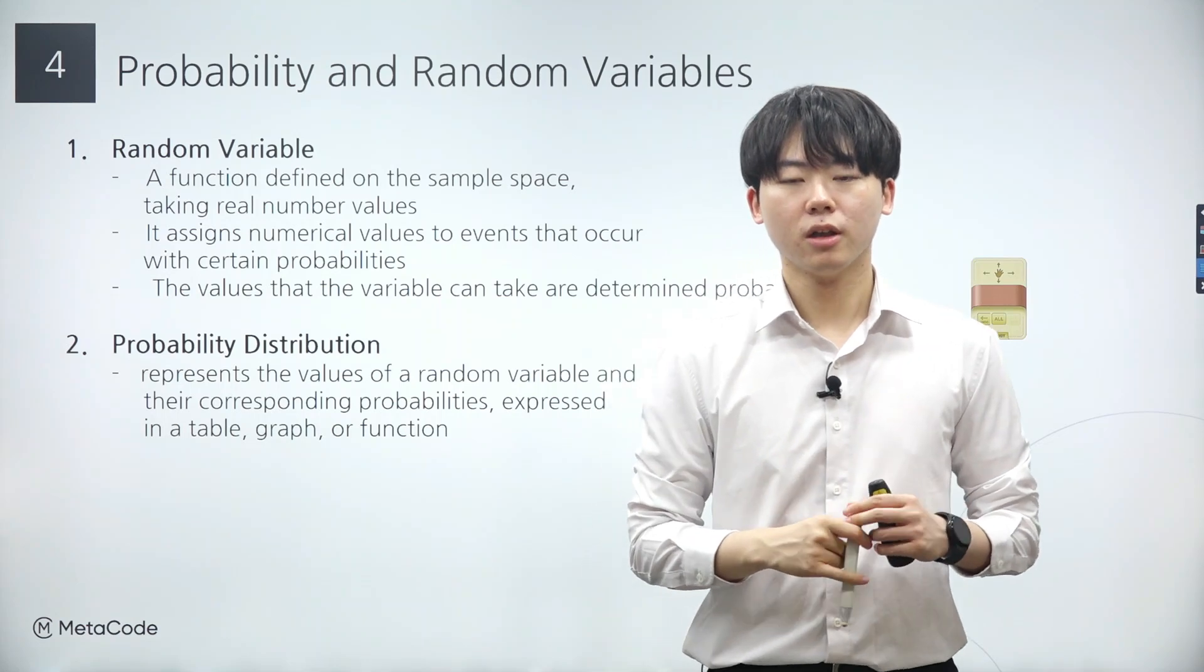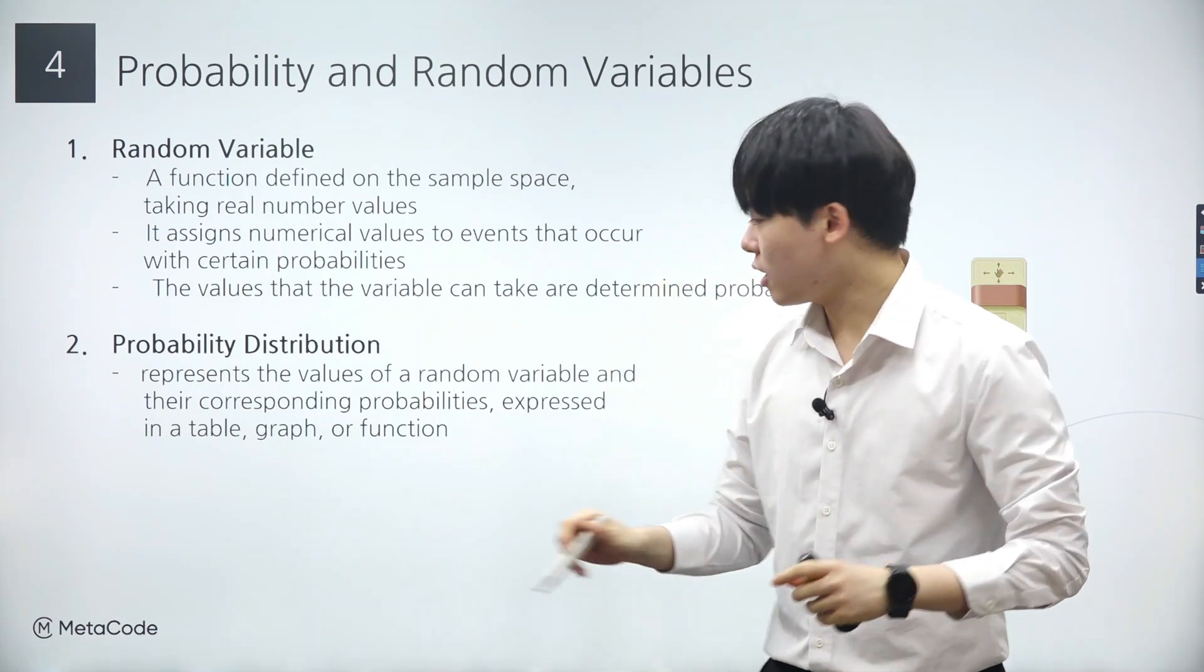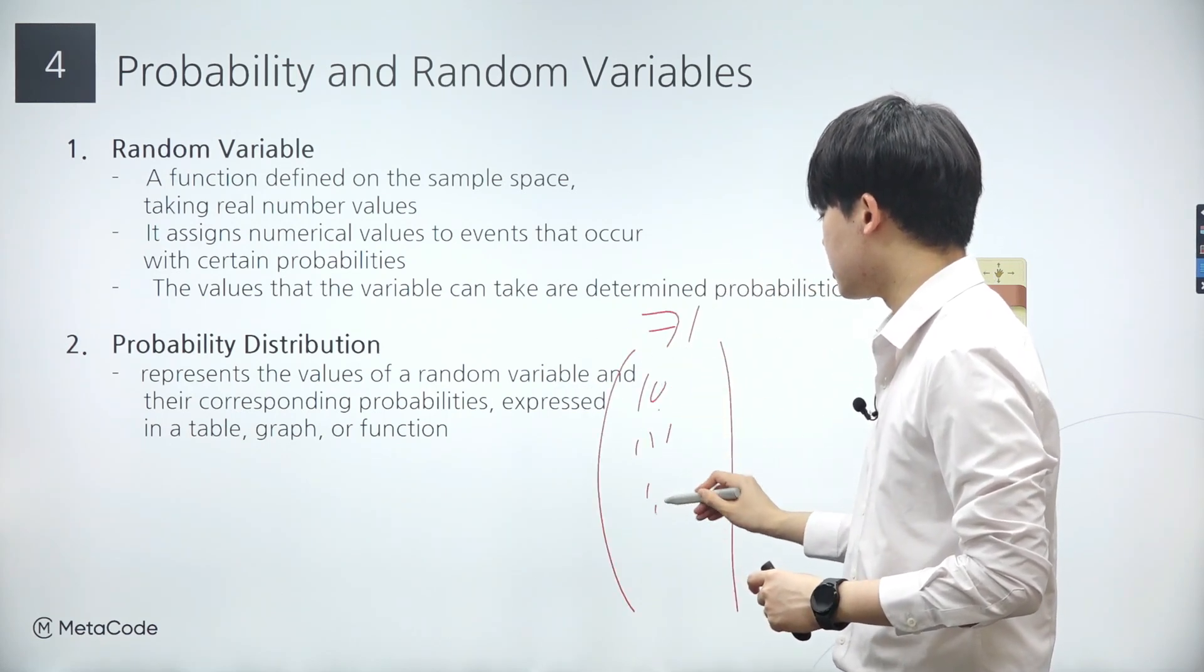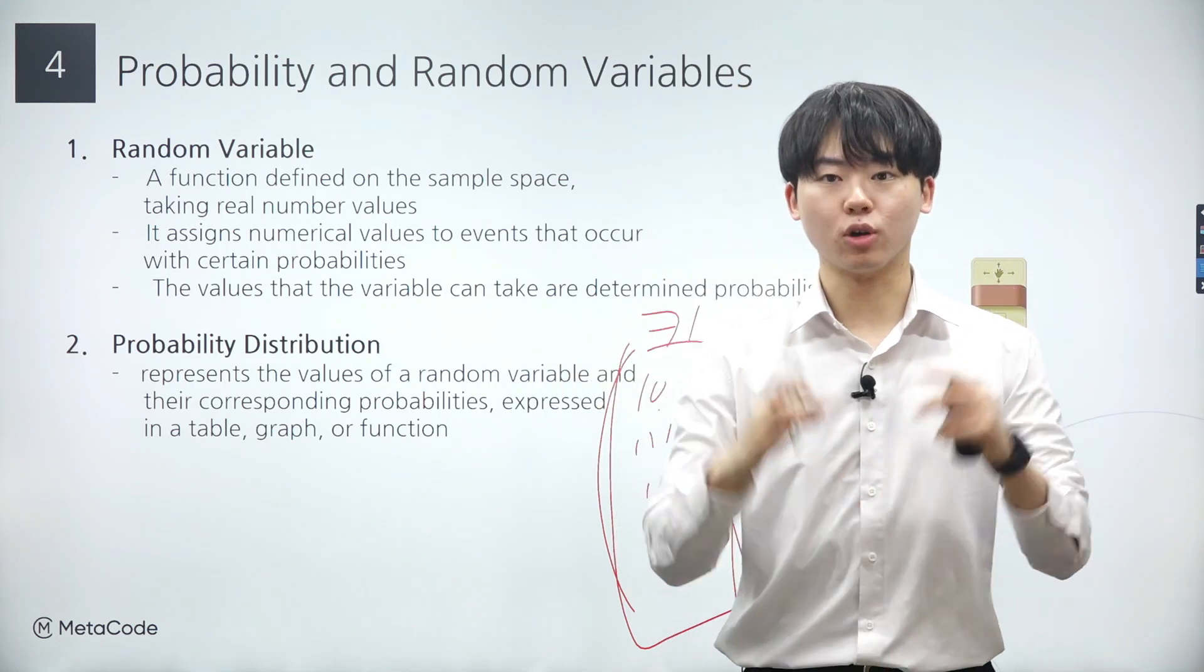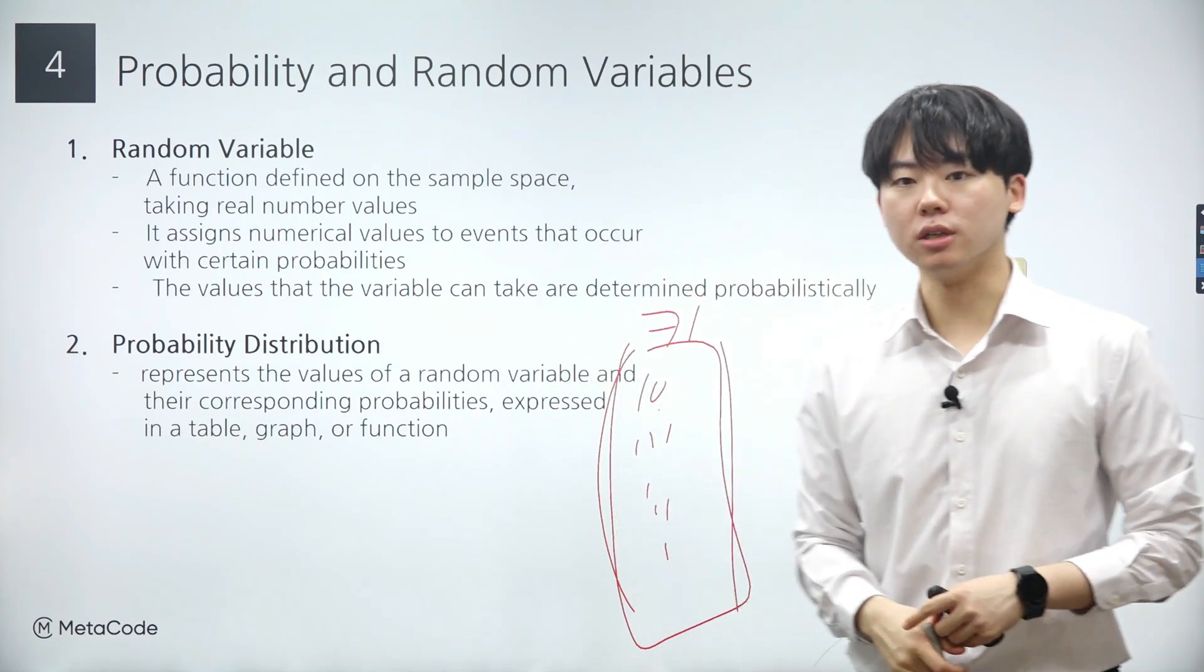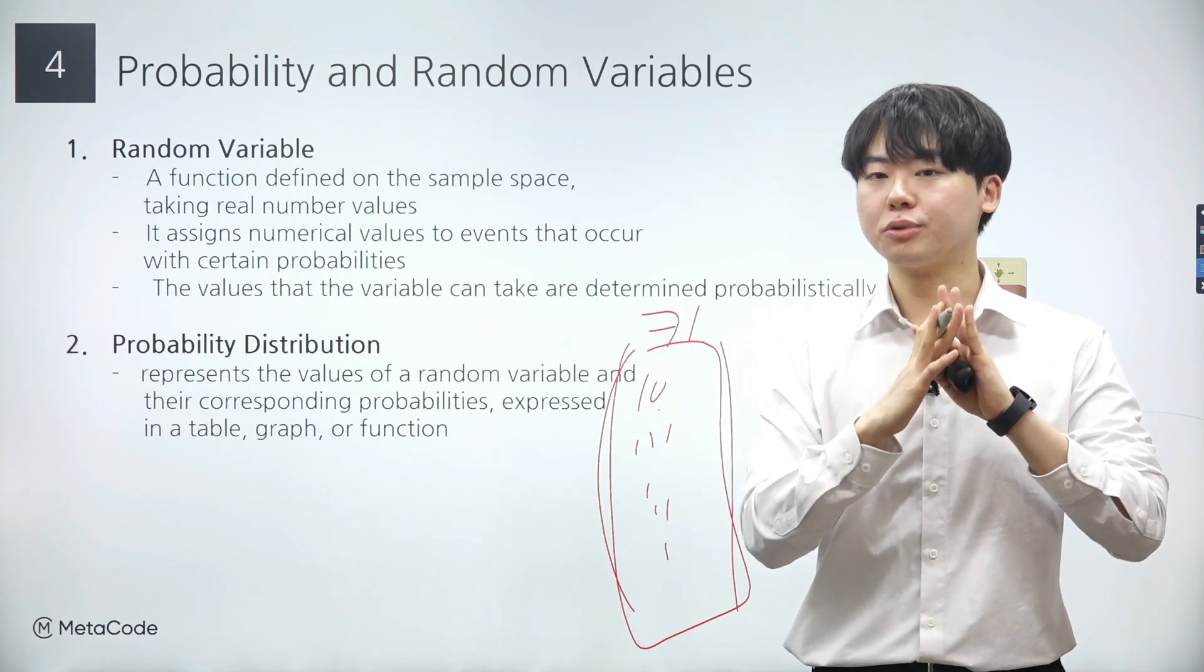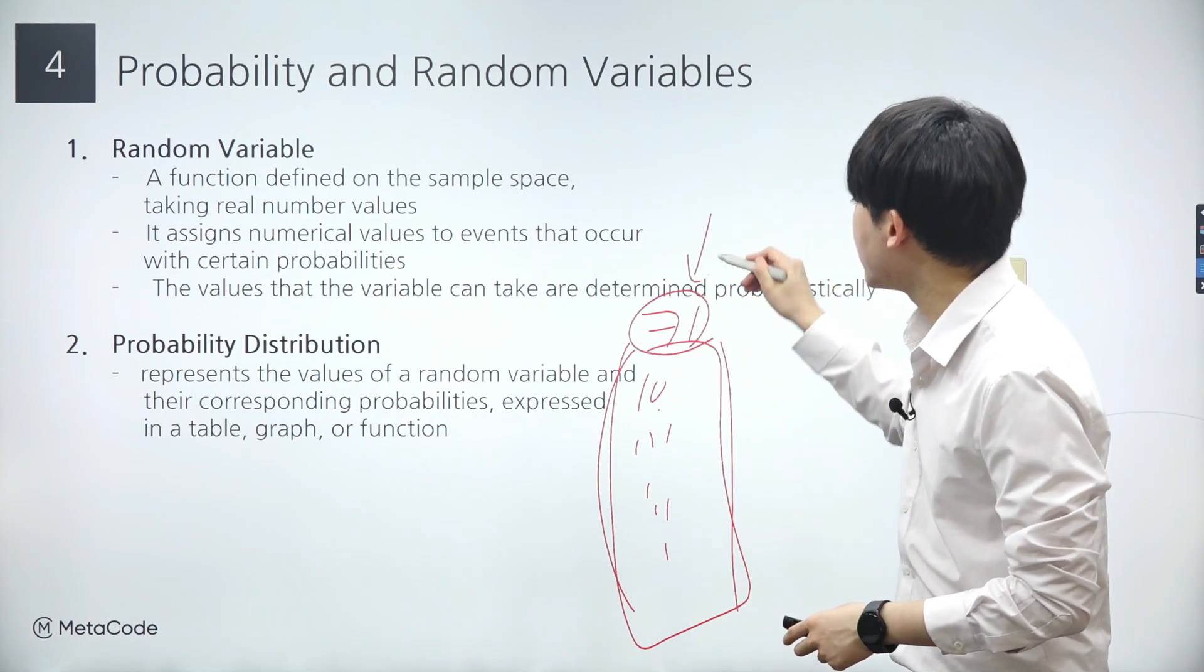Let's dive a bit deeper into the concept of a random variable. Imagine we have a dataset consisting of various heights. You could view this dataset simply as a list of values stacked vertically, or you could conceptualize it as a random variable. How you approach the dataset fundamentally changes depending on this perspective.